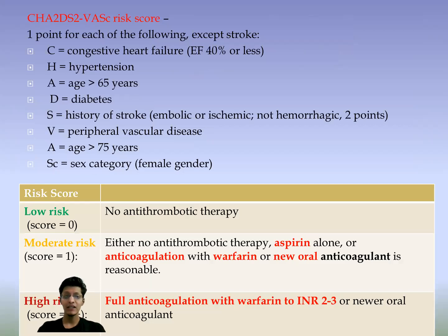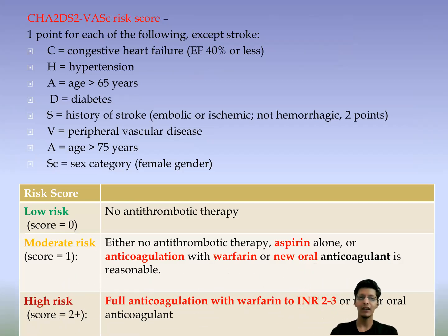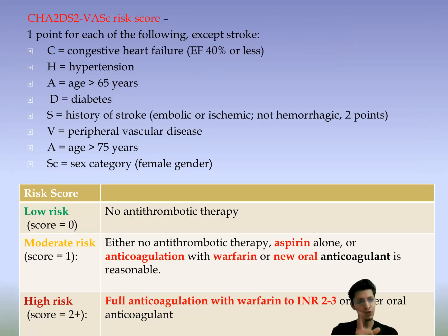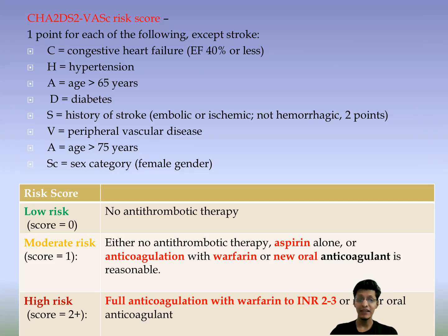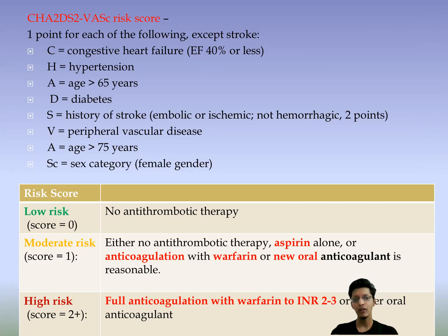The CHA2DS2-VASc score: one point each for congestive heart failure, hypertension, age 65-74 years, diabetes, vascular/peripheral vascular disease, female sex; two points for prior stroke or embolism; one point for age 75 or more. Score zero: no antithrombotic therapy needed. Score one (moderate risk): aspirin alone or anticoagulation with warfarin or a newer anticoagulant. Score two or more (high risk): full anticoagulation required.